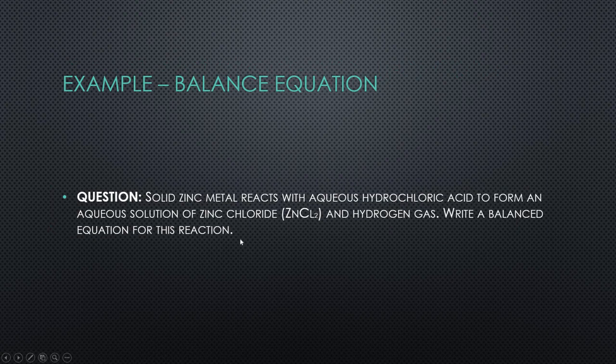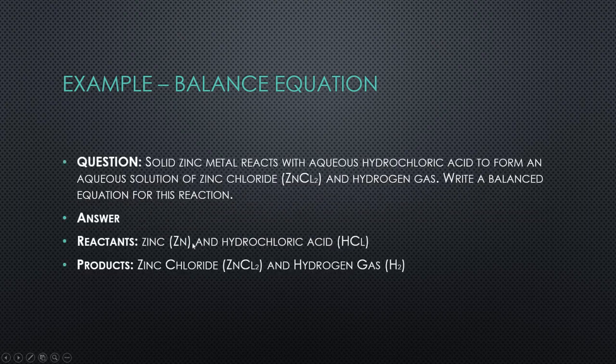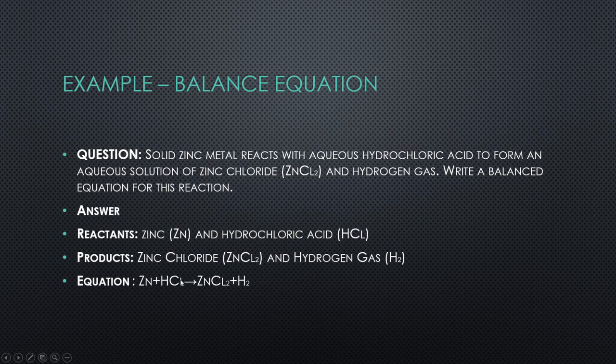So you can write this down and follow along. Solid zinc metal reacts with aqueous hydrochloric acid to form an aqueous solution of zinc chloride and hydrogen gas. You are required to write a balanced equation for this. The first step will be to identify your reactants and your products. So the reactants here are zinc (Zn) and hydrochloric acid (HCl) and your products will be zinc chloride (ZnCl2) and hydrogen gas (H2). So then all you have to do is put it in equation form: Zn + HCl → ZnCl2 + H2.